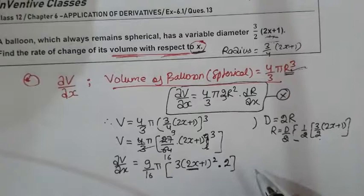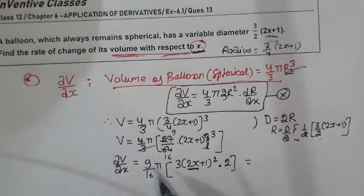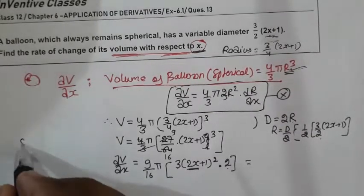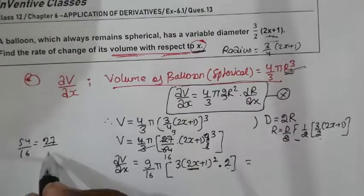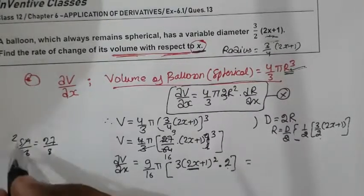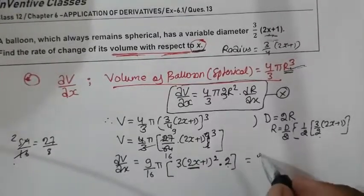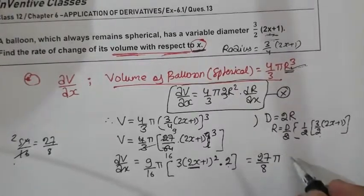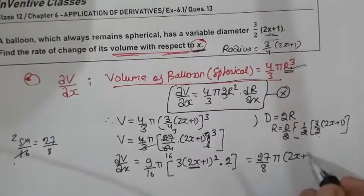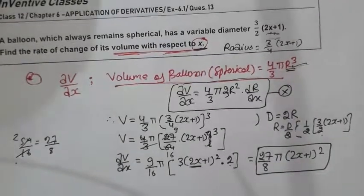So finally when you have this into 2, it is 54. And 54 when you have 16 divided, this is 27/8 pi, 2x+1 square, 2x. This is your answer, please note it down. Thank you.